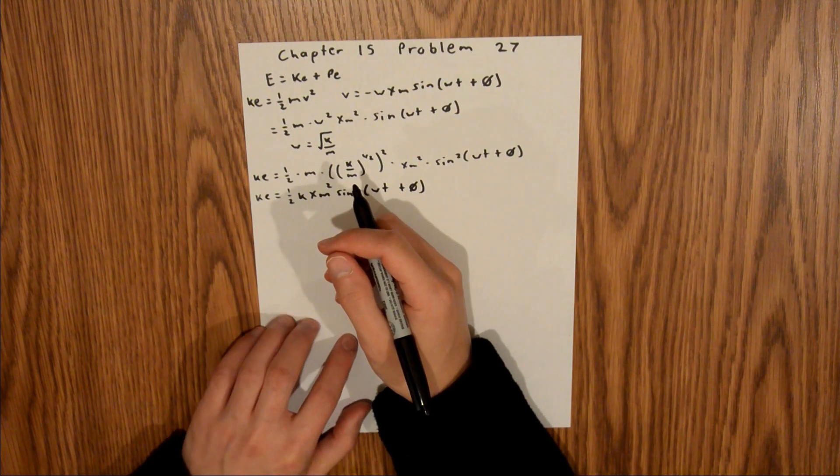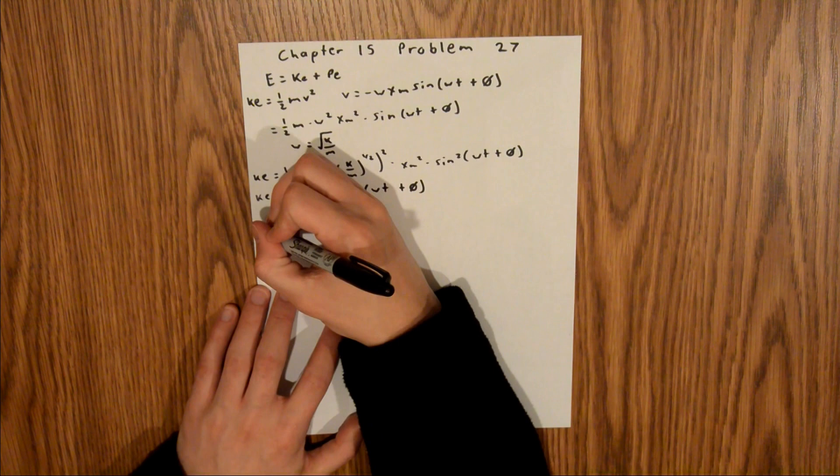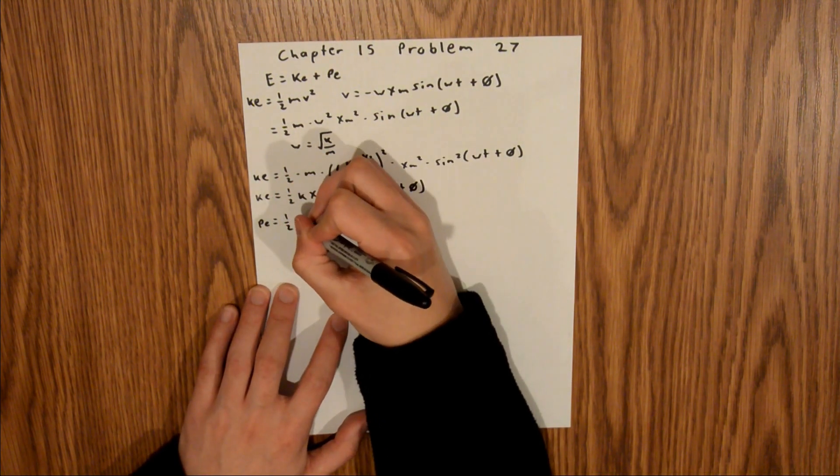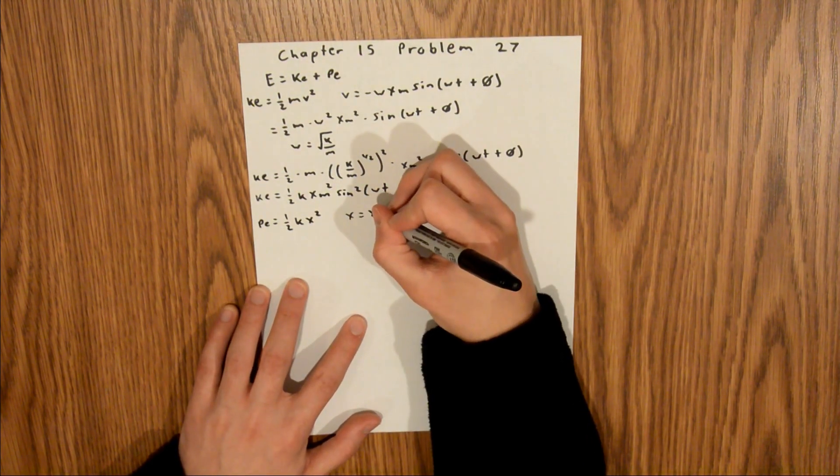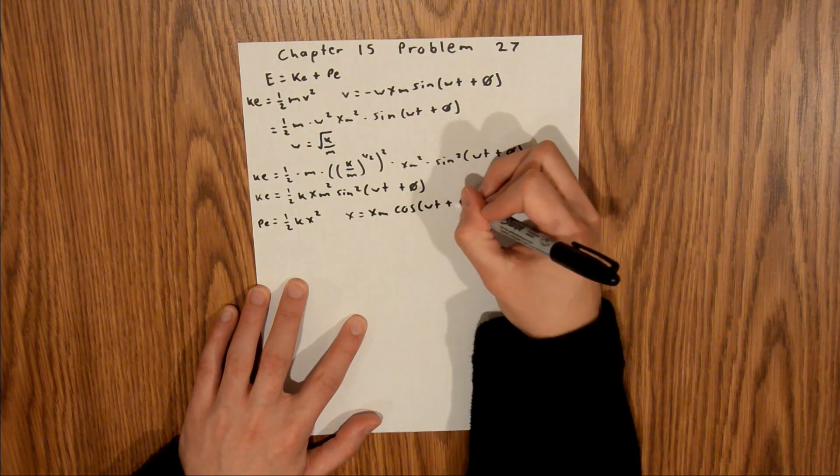And then we could do something similar for the potential energy. And so potential energy is equal to 1 half kx squared, where x is equal to xm cosine of omega t plus phi.